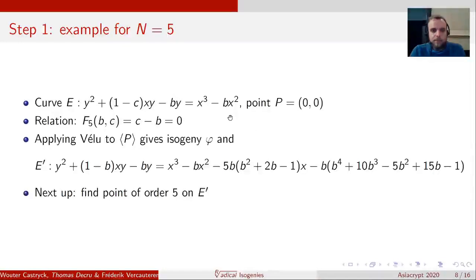Now with this in mind, we can apply Vélu with kernel generator P, and then we end up on E prime, on this elliptic curve. So now we already have the isogenous curve, and next we want to find a point of order exactly 5 on this isogenous curve.